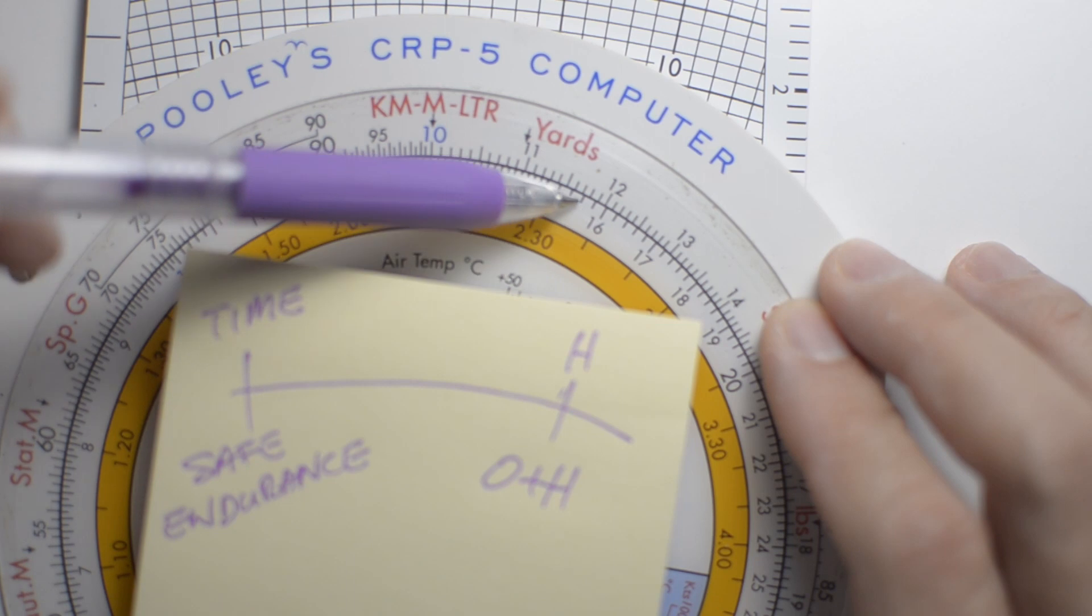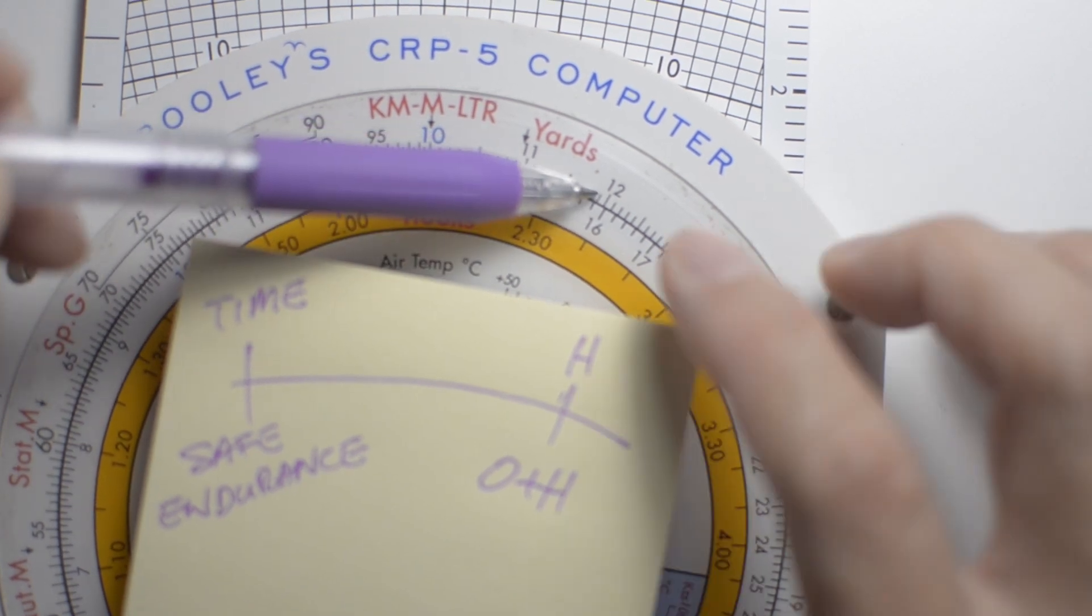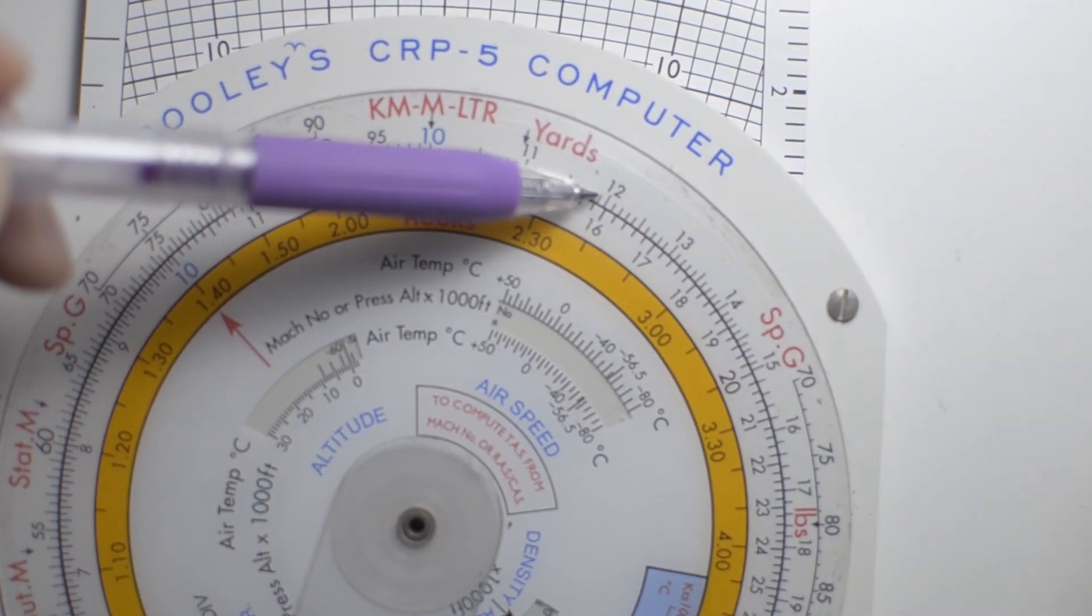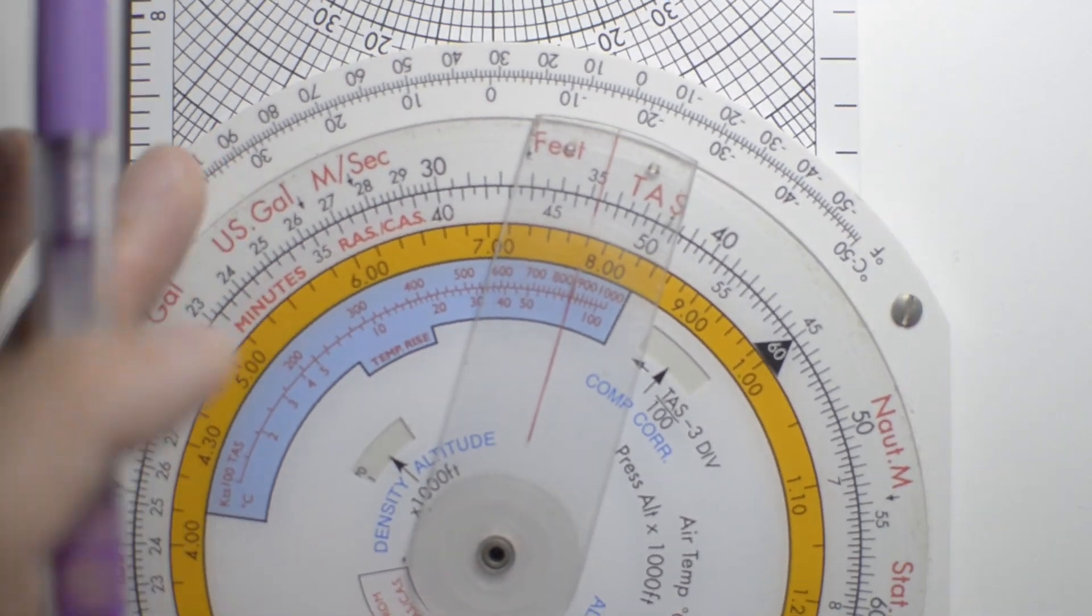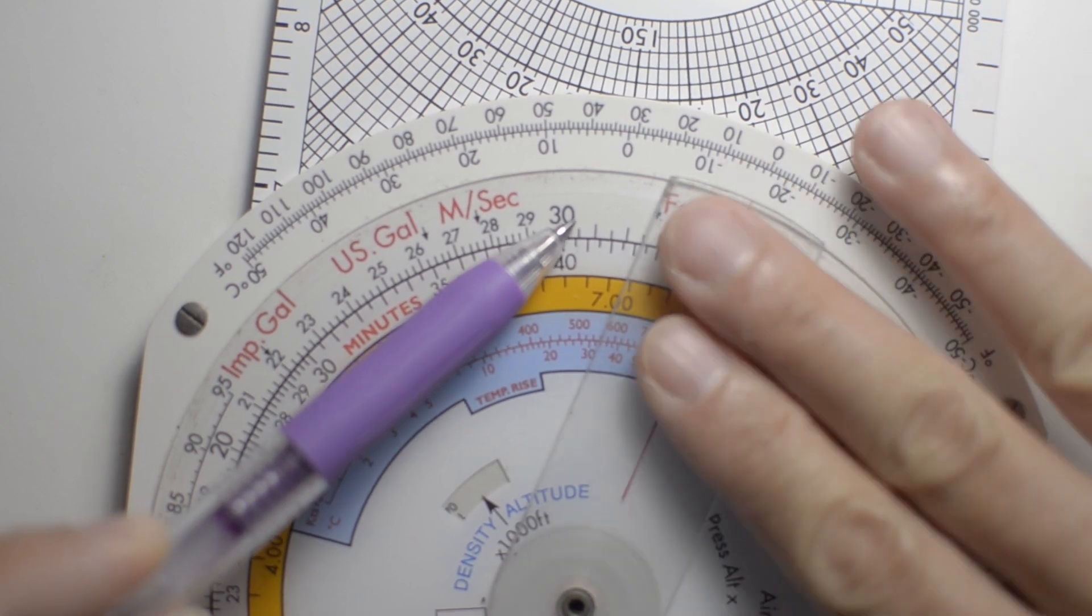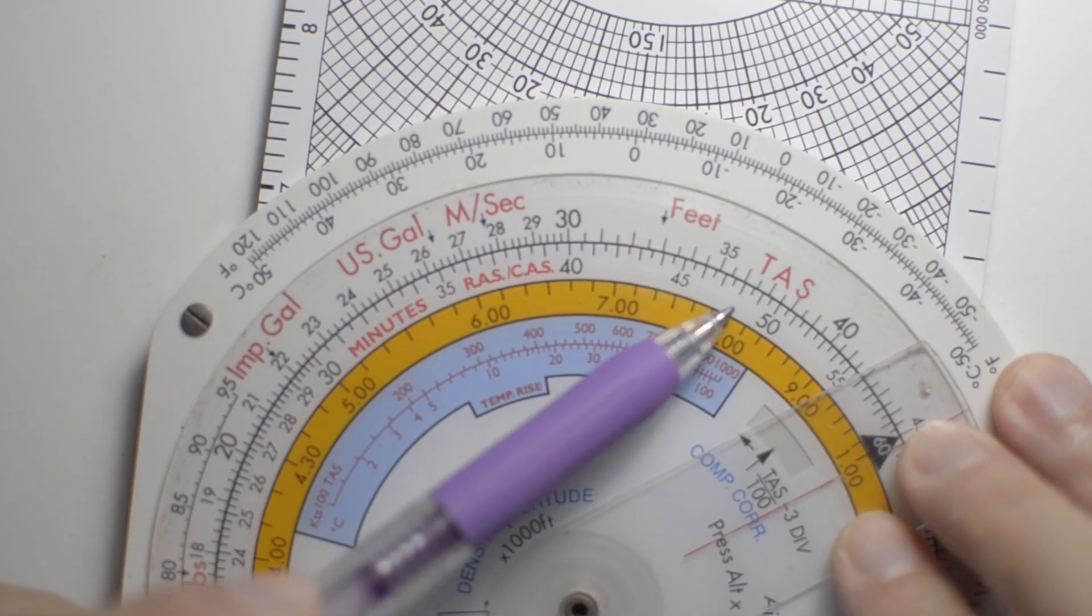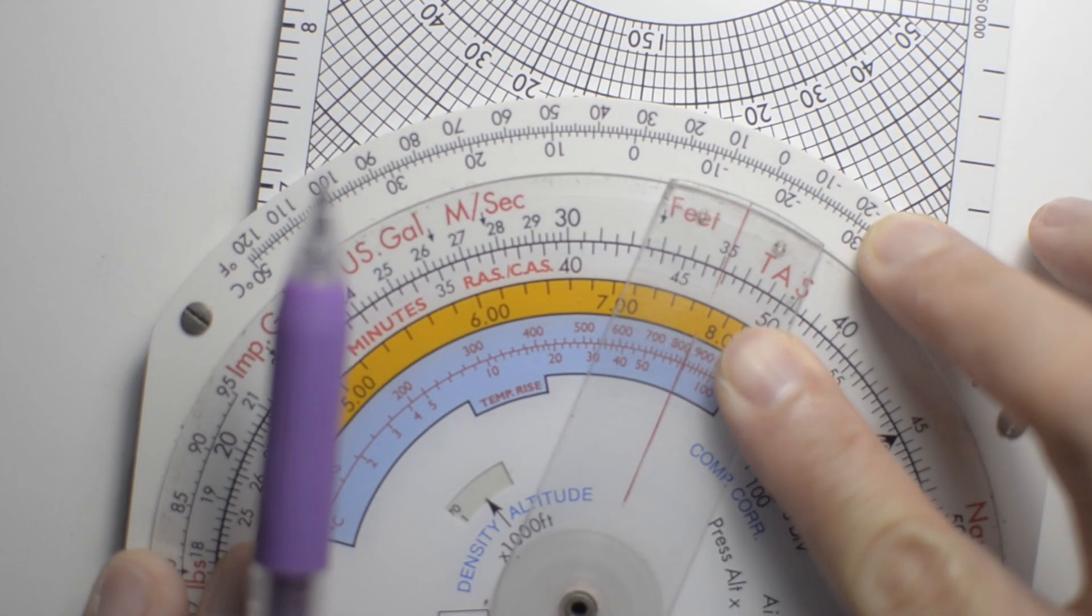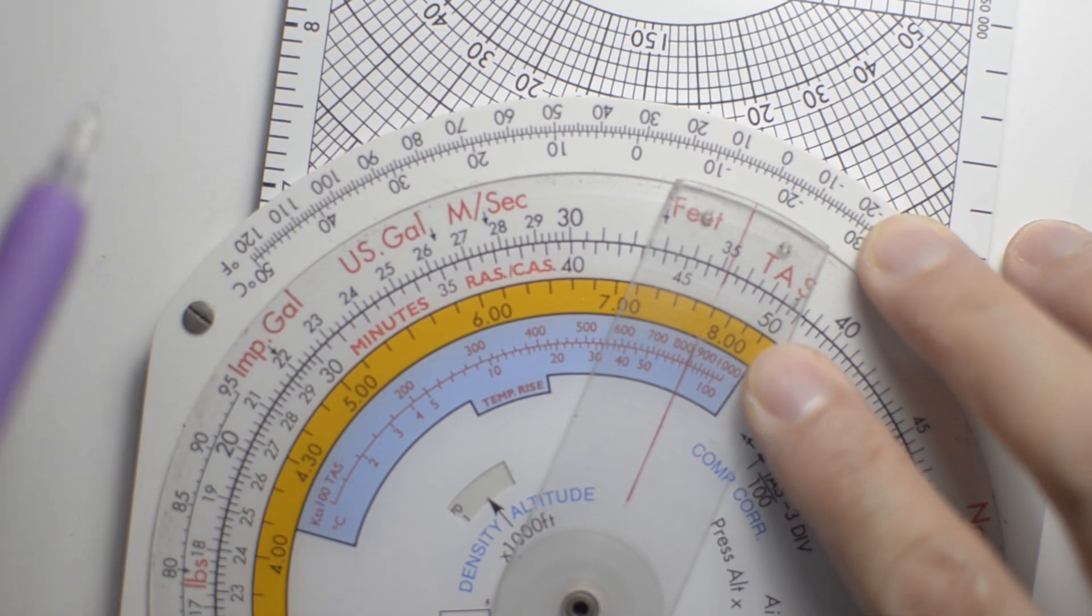So we're going to look around for 300 knots on the outside, and that happens to be on the other side of the CRP5, so let me turn that around. And 350 is right there, so 35, and I'm going to stick the cursor on it.